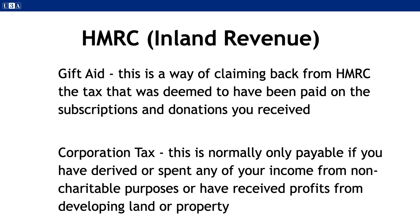Before you can claim gift aid you must be registered with HMRC. You do not need to have a charity number if your gross income is less than £5,000 per annum. Gift aid, which will increase your donations by 25%, can be claimed for up to four previous years. You will need the members to sign a declaration form to say they are taxpayers. You must submit a tax return if you are asked by HMRC to do so.